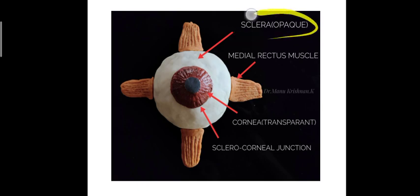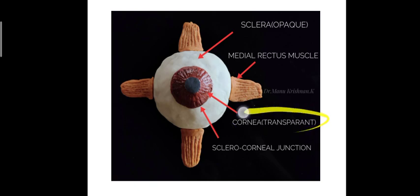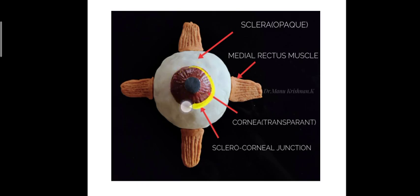The sclera is opaque and the cornea is the transparent part, and the junction between these two is termed the sclerocorneal junction. There are four muscles represented here which are involved in the movement of the eyeball — we will discuss those later, but you can observe how they are attached to the eyeball.